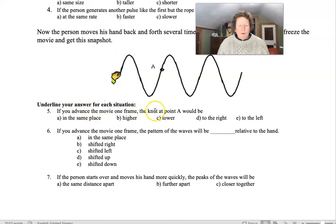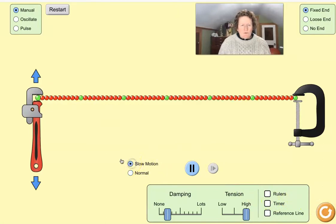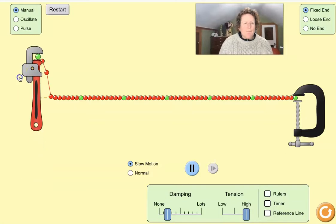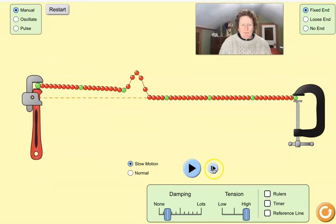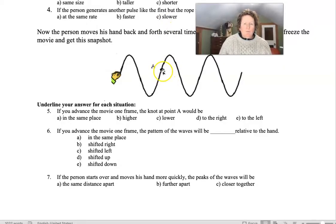If you advance. If you advance the movie one frame, the knot at point A would be. Well, let's go look at, let's make a manual pulse and get a green dot in the same position as A here. We can go to manual. We'll reset it. We'll go to slow motion. We'll put in one pulse. We'll stop it and we'll advance it just a little bit at a time until we get a green bead that's in the same position. So see this green bead here? It's in a similar position to this point A.